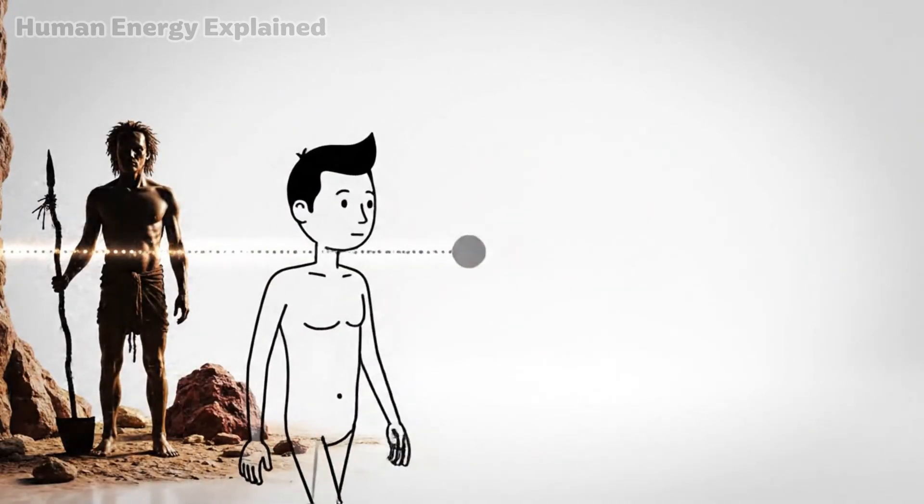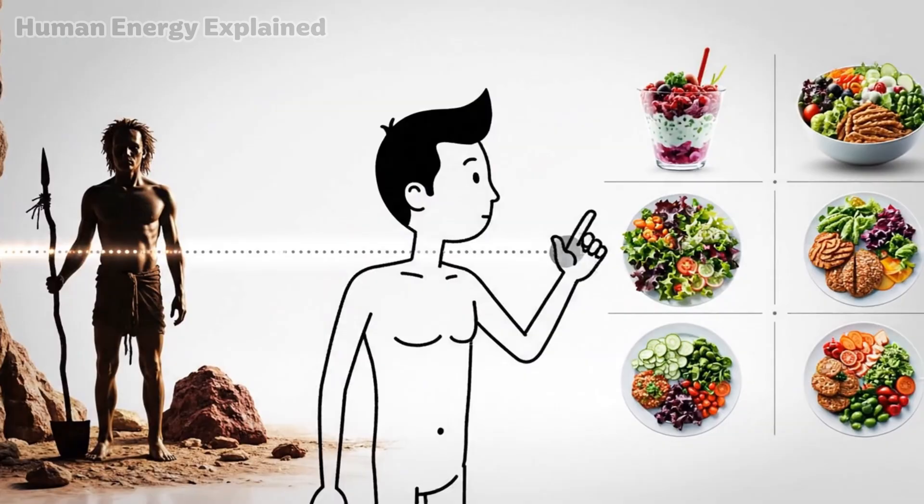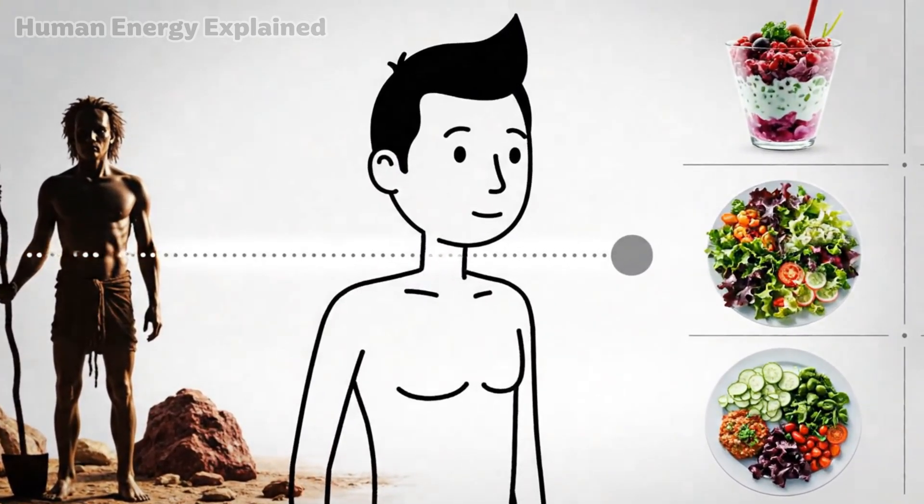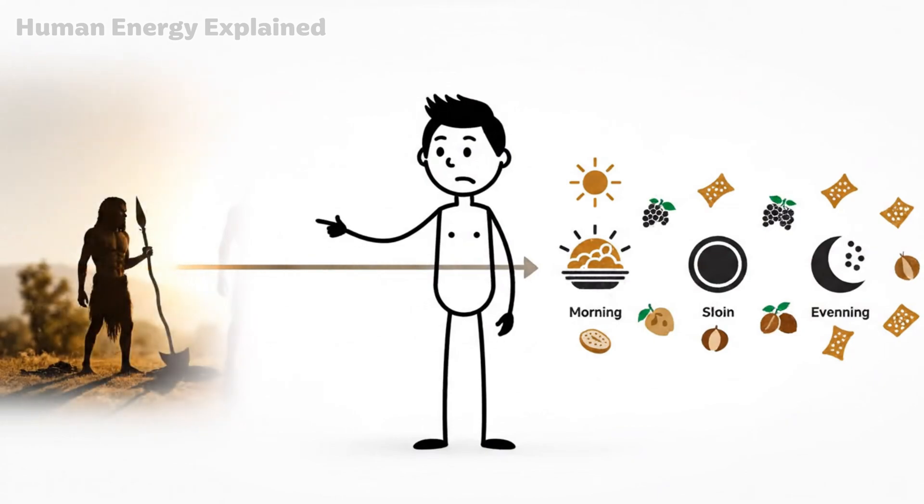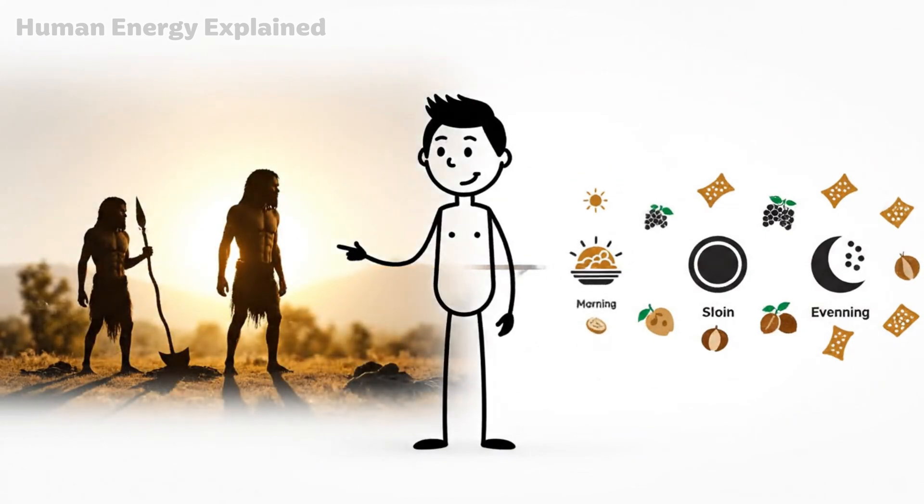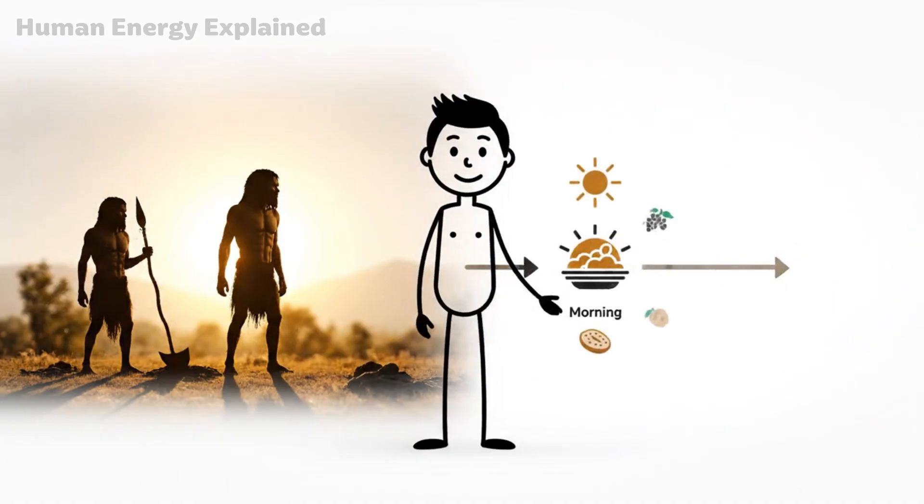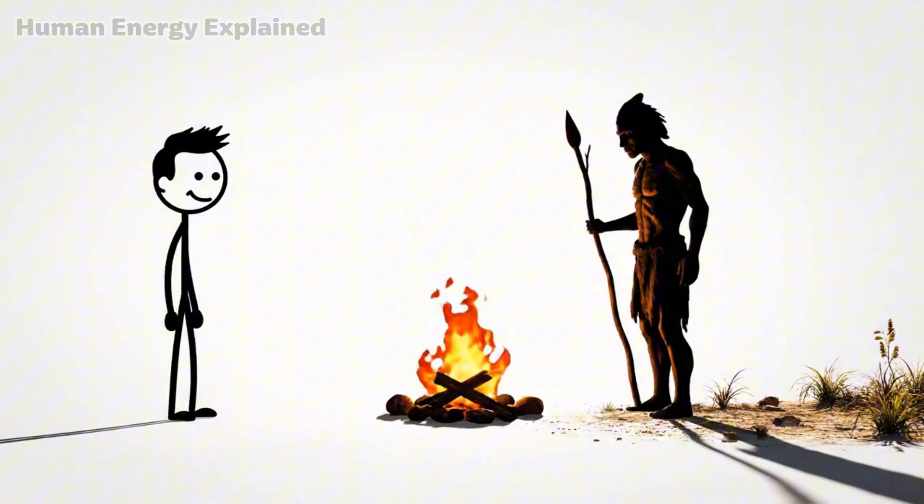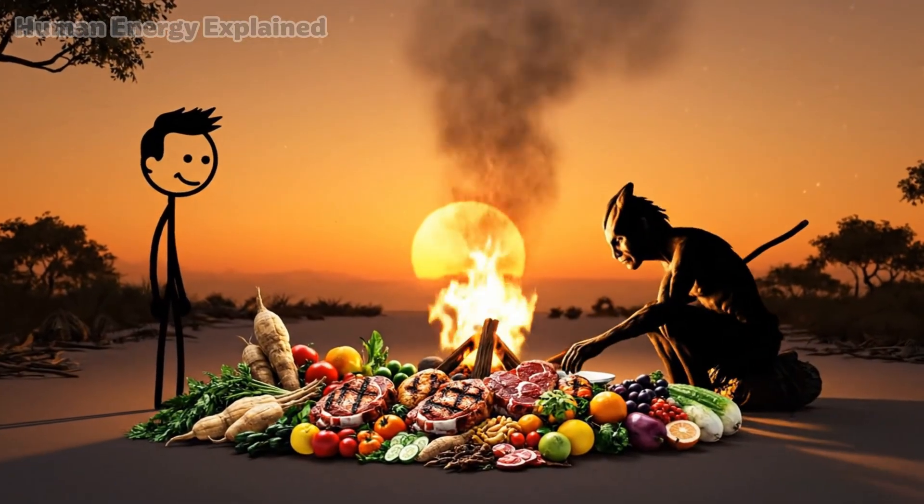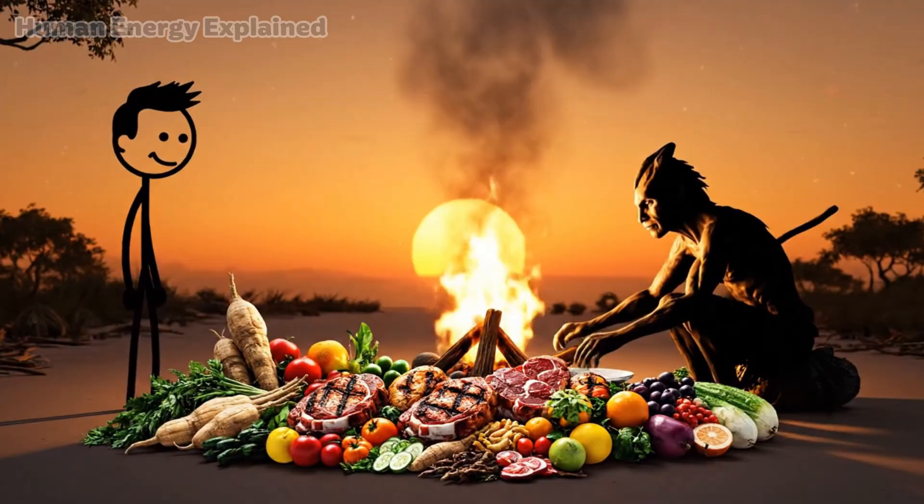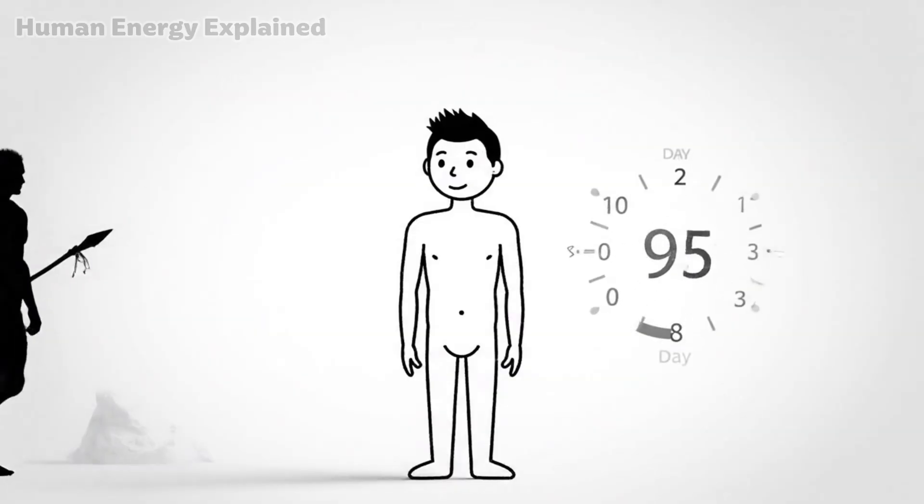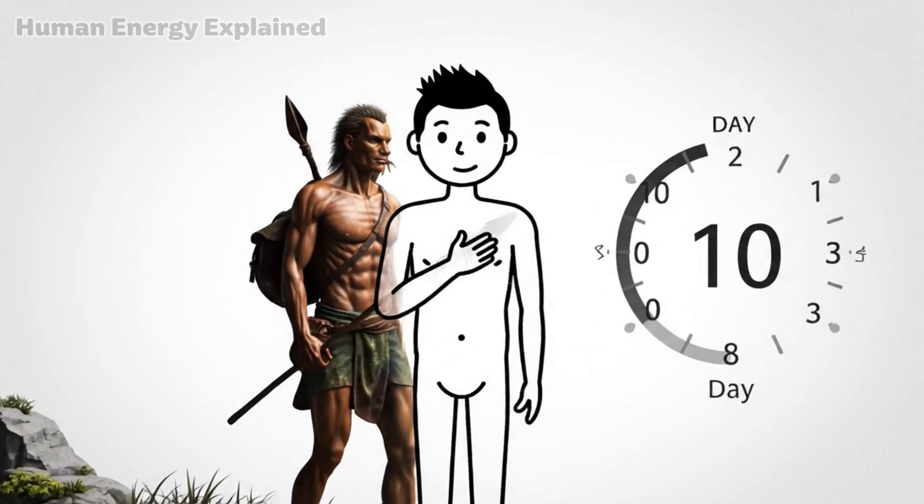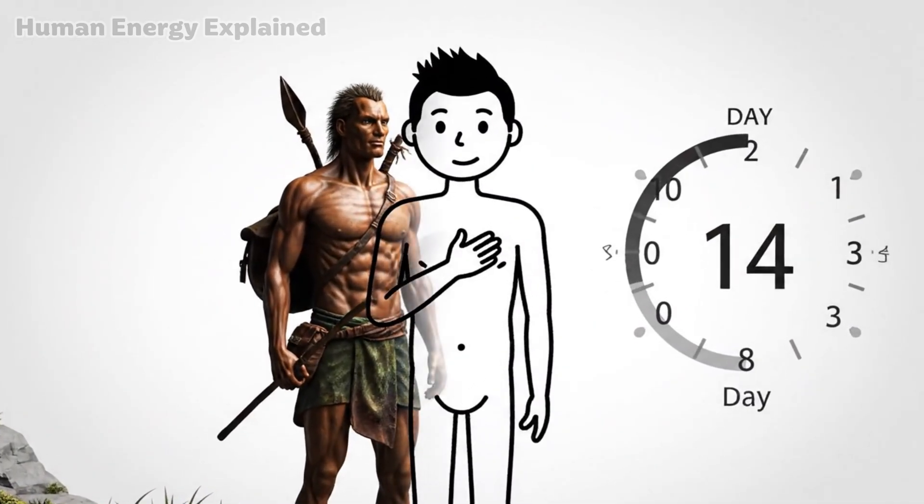This isn't some modern biohacking discovery. Humans didn't evolve eating three meals a day plus snacks. Our hunter-gatherer ancestors ate when food was available, often going long stretches without eating, then consuming a large meal after a successful hunt, typically in the evening. Three meals a day is the modern experiment. Your biology is ancient, and during week two, you're essentially returning to a pattern your genes recognize deeply.